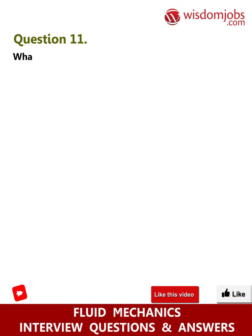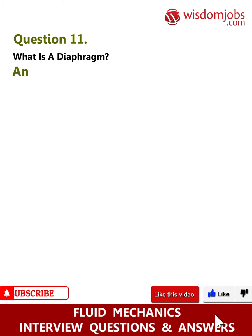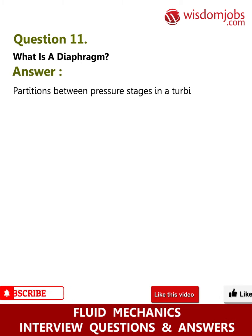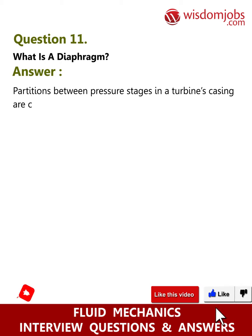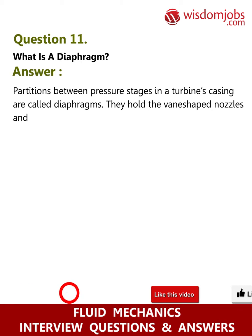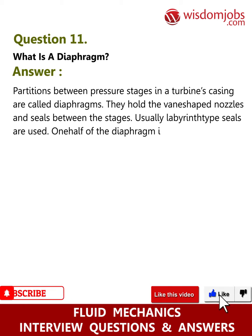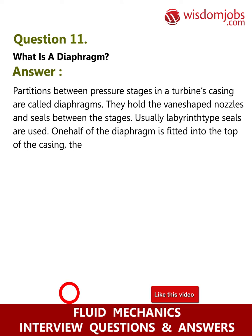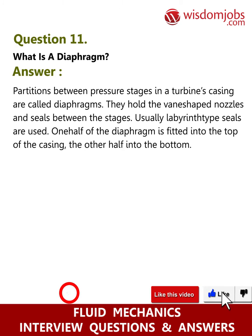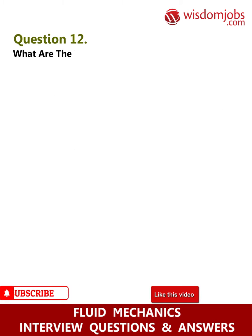Question 11: What is a diaphragm? Answer: Partitions between pressure stages in a turbine's casing are called diaphragms. They hold the vane-shaped nozzles and seals between the stages — usually labyrinth type seals are used. One half of the diaphragm is fitted into the top of the casing, the other half into the bottom.